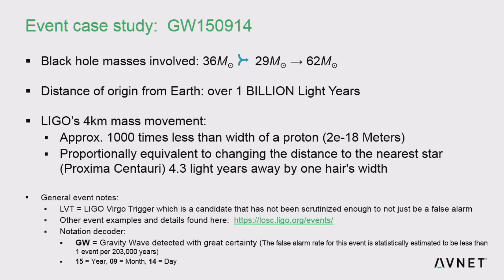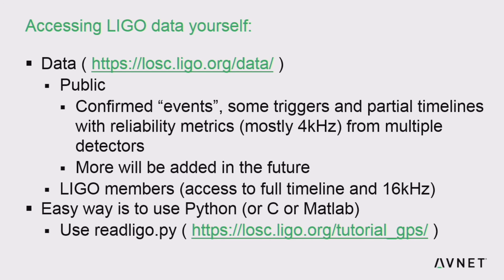Another way of thinking about it: it would be the proportional equivalent of Proxima Centauri — which is 4.3 light years away — moving one hair's width. At that great distance, if you scale that number up, they were able to detect that movement given all the noises here on our planet. Isn't that incredible?